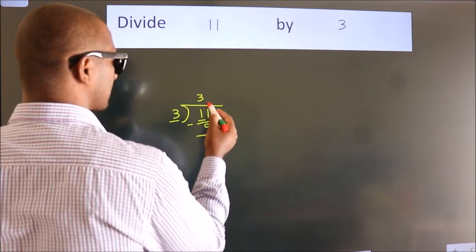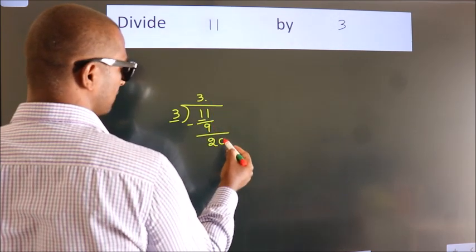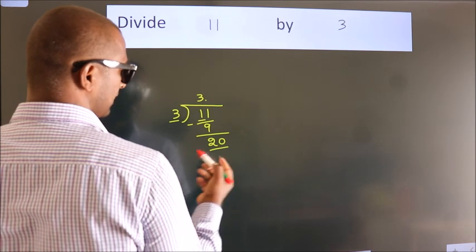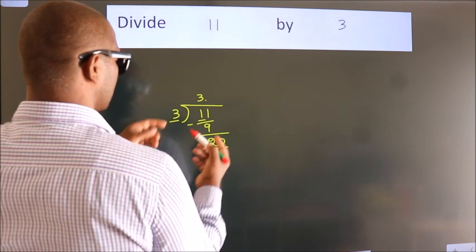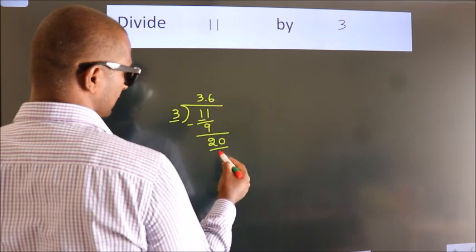So what we do is put a dot and take 0, giving us 20. A number close to 20 in the 3 table is 3 times 6 equals 18.